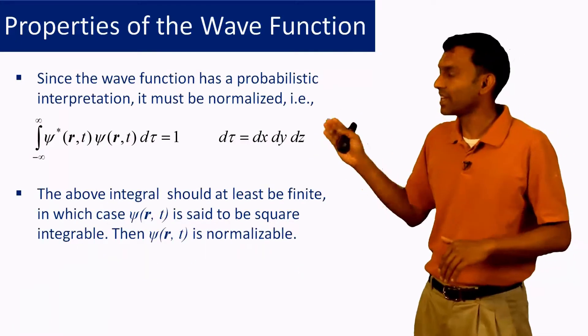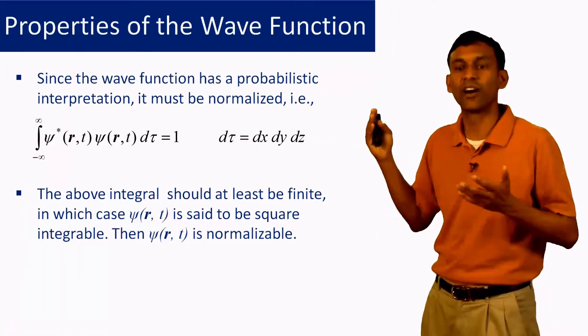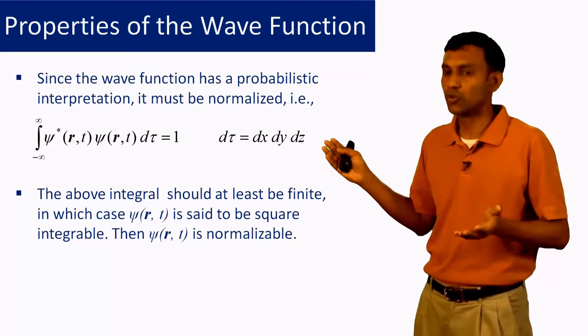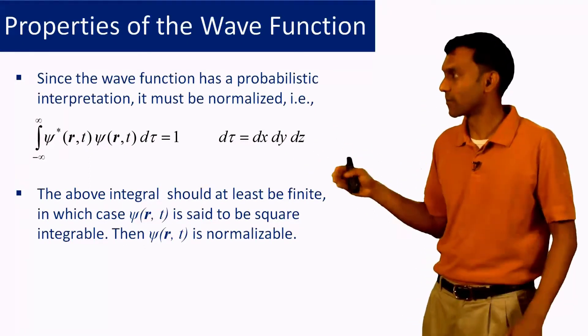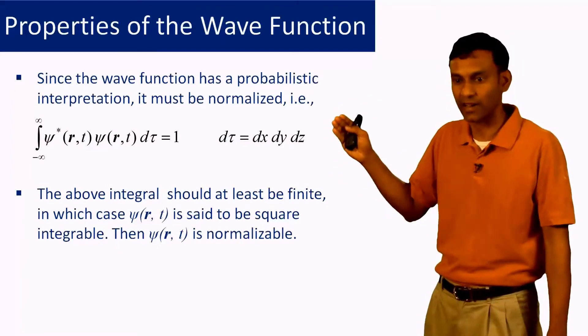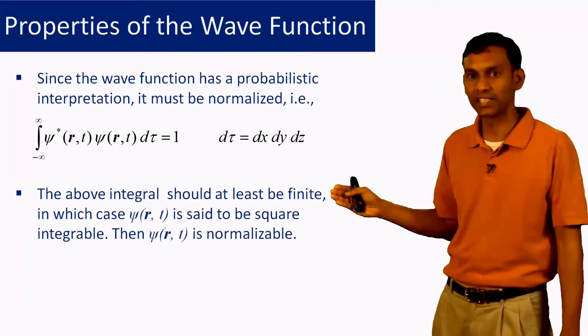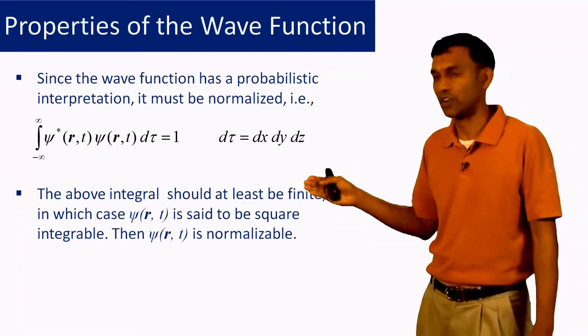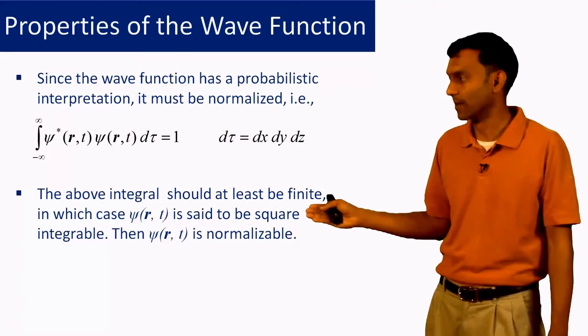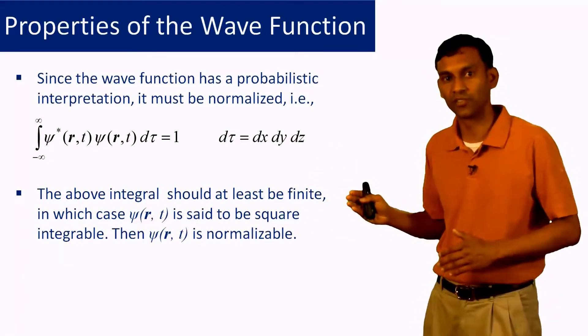Now a slightly weaker condition is that when you do the ψ*ψ integral, this integral should be finite. That is okay too, because in that case you can simply multiply ψ by a constant quantity to scale that finite number so that this integral does become equal to 1. In that case, although we do not call the wave function to be normalized, we say it is normalizable, and that is also a good enough property for a wave function.